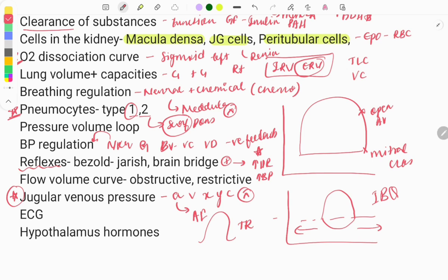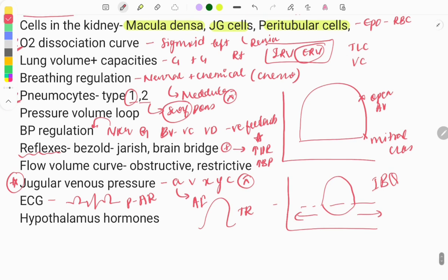For the ECG, you need to know the waves: the P wave, QRS complex, and T wave. Questions are asked about what the P wave signifies — it signifies atrial depolarization — and the QRS complex duration. Diseases related to the ECG like atrial fibrillation and atrial flutter will be covered in more detail in medicine.